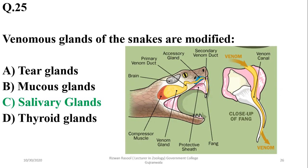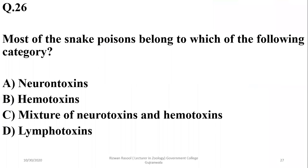Question twenty-five: most snake poisons belong to which category? Most snake poisons can be a mixture of neurotoxins, which destroy neurons, and hemotoxins, which destroy blood cells. The correct option is charlie.